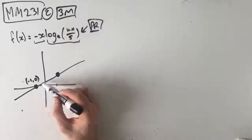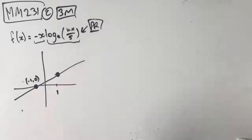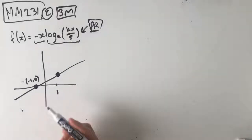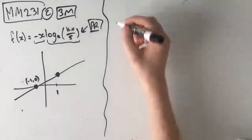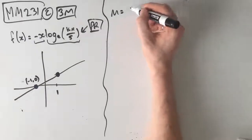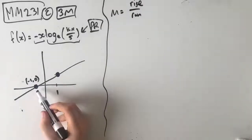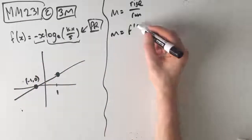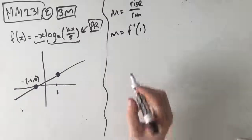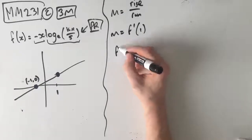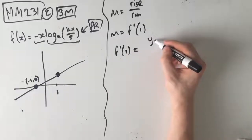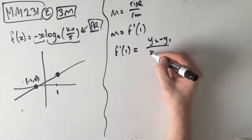Given that we know it passes through these two points and it's a tangent, that means the gradient of f(x) is the same as the gradient from this point to this point. So our gradient equals rise over run from here to here, and it's also equal to the gradient of the function at x equals 1, so f'(1) equals rise over run, which is y2 minus y1 over x2 minus x1.